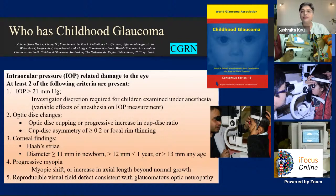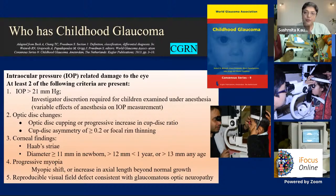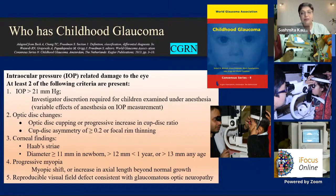Childhood glaucoma is defined as IOP-related damage with at least two of the following: IOP more than 21 mmHg (with investigator discretion under anesthesia — most take 16 as the threshold for very small children); optic disc changes with cupping or cup-disc ratio more than 0.2 (in small babies, anything over 0.3 is very suspicious); corneal findings including Haab's striae or diameter more than 11 mm in the newborn, 12 mm under one year, or 13 mm at any age; progressive myopia or axial length increase beyond normal growth; and a reproducible visual field defect consistent with glaucomatous optic neuropathy (for older children).